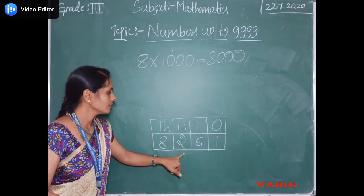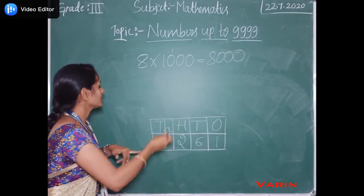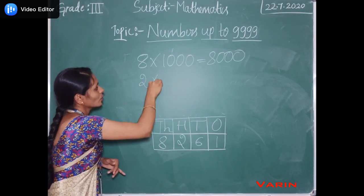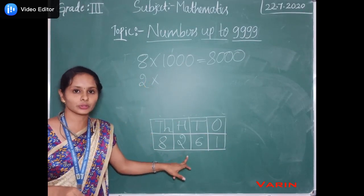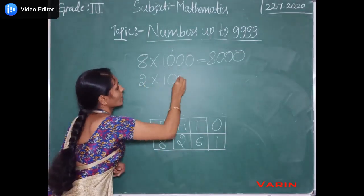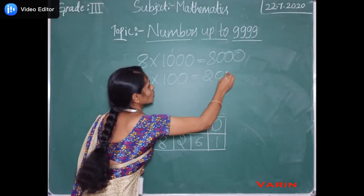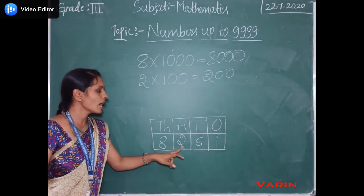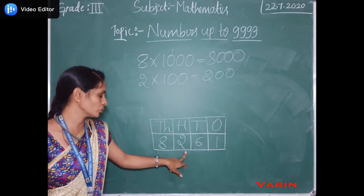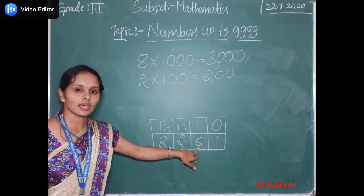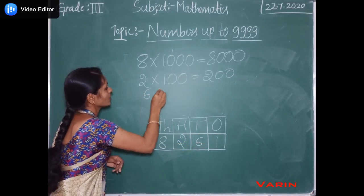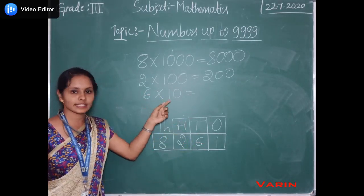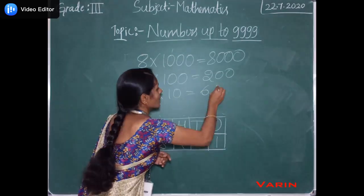In the hundreds place, 2 is there. So we have to multiply 2 by 100. We get 200. So 200 is the place value of 2. And in the tens place, 6 is there. So we have to multiply 6 by 10. 6 into 10 it becomes 60.